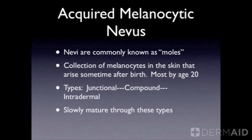Most of our moles occur by about the age of 20, and there are several different types of moles. If you have a mole present at birth, it's called a congenital nevus, or more commonly known as a birthmark. The acquired nevi come on after birth, and they're junctional, compound, and intradermal. These are the more common types, and moles tend to mature through these different types.